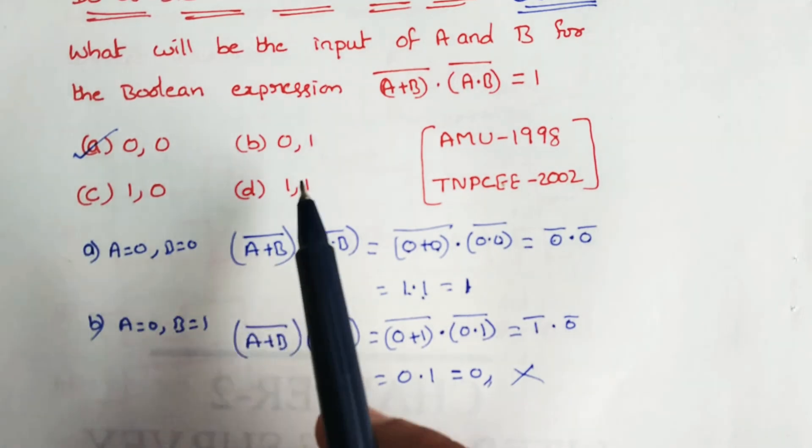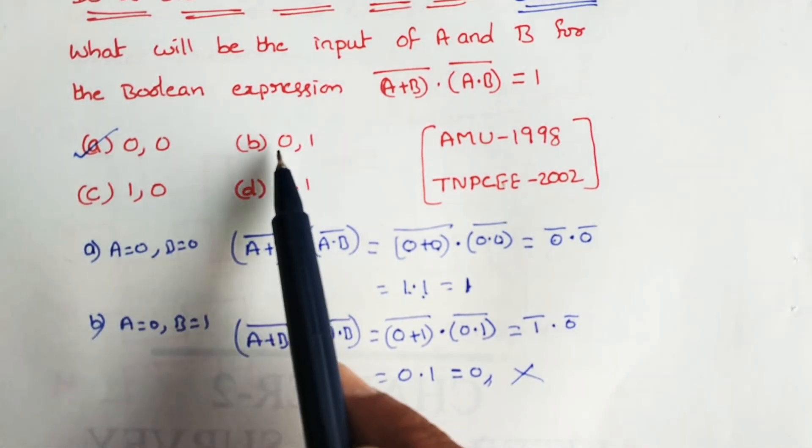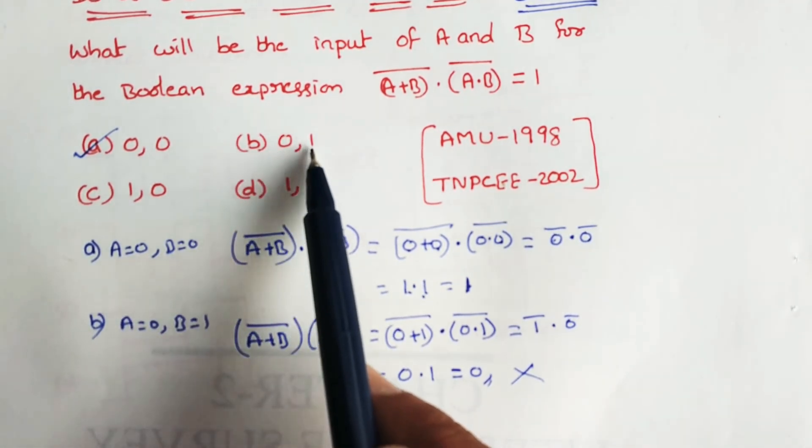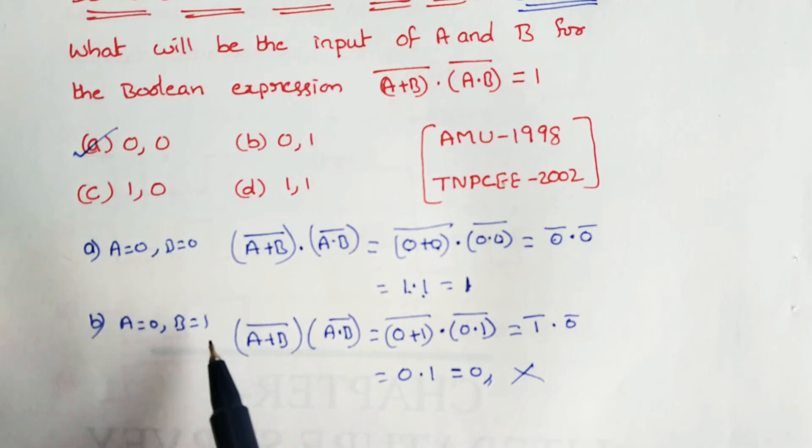Now we have option B. The option is A is equal to 0 and B is equal to 1.